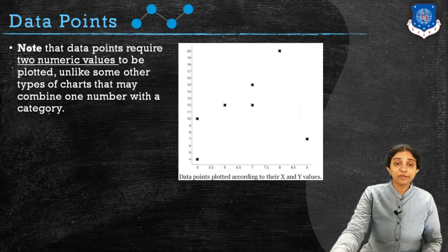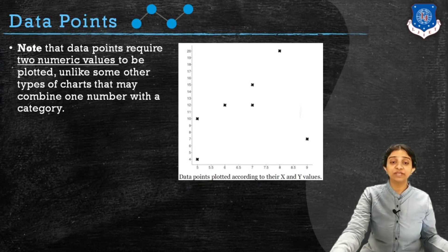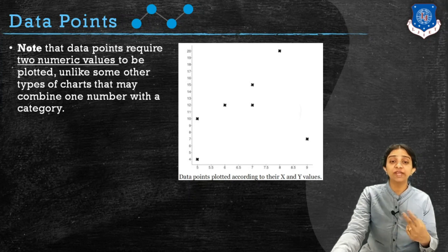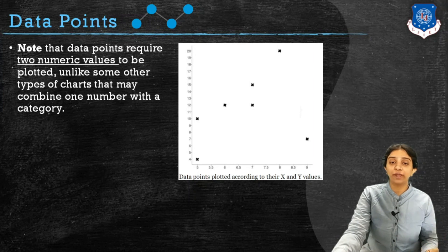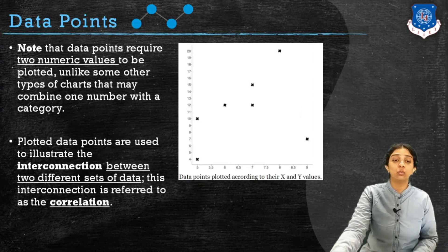It is important to note that a data point requires two numeric values, unlike some other charts which might not require two numeric values. To draw a data points chart we must always have data with two types of numeric values: one value represented over the X axis and another one represented over the Y axis.